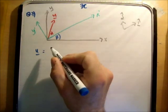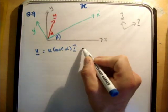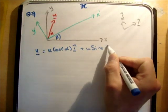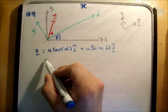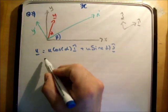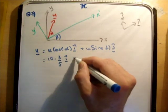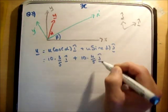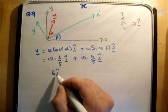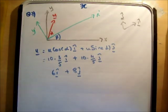So, just resolve this vector, u. We're going to get u cos alpha i hat plus u sin alpha j hat. And we're going to get that, that's going to be equal to 10 times the cos of alpha, which I said was 3 fifths i hat, plus 10 times the sin of alpha, which was 4 fifths j hat. So, that becomes 6 i hat plus 8 j hat.